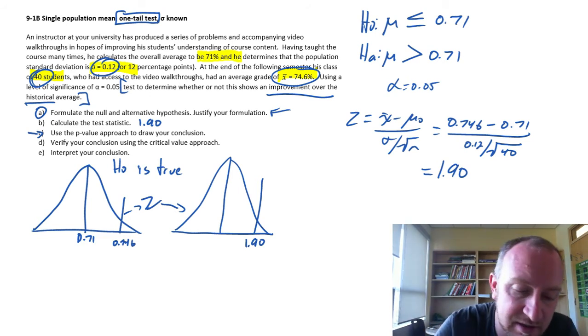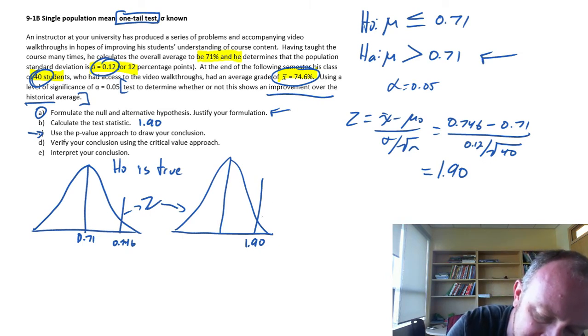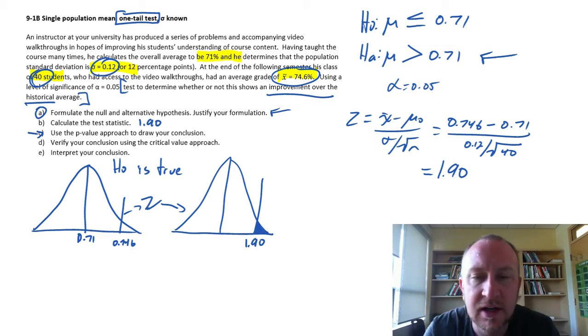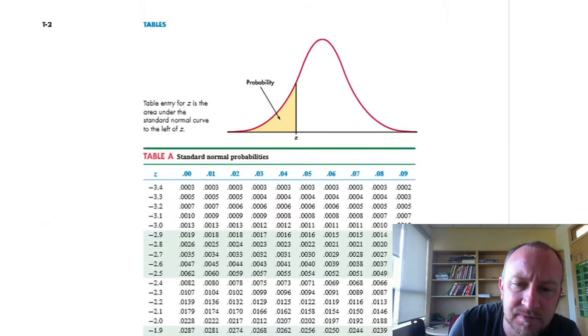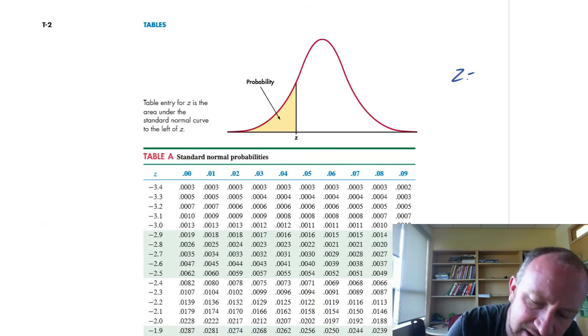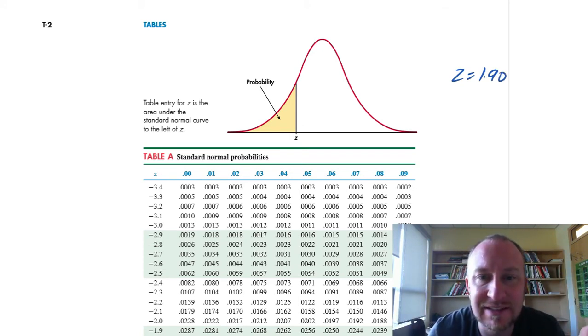Now we want to find the p-value. In this case, for our one tail test, and this is an upper tail test, the p-value is going to be in the upper tail of the distribution. So what I want to do is calculate the area under the curve in the upper side, the right-hand side of that distribution. If we go to our z-tables, I'm looking for z of 1.90.